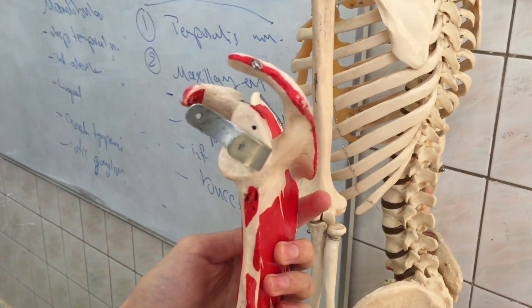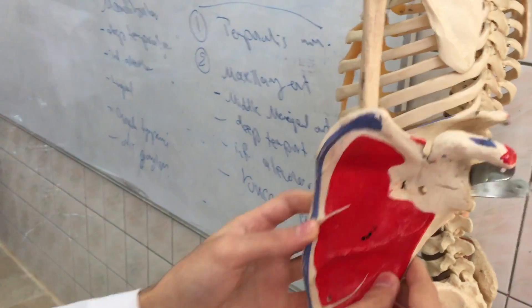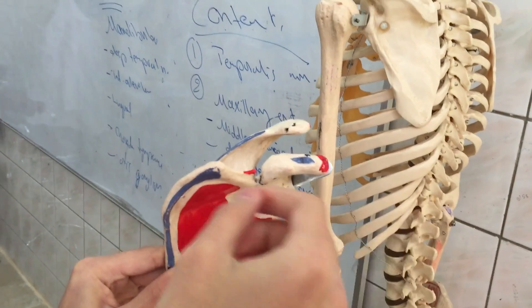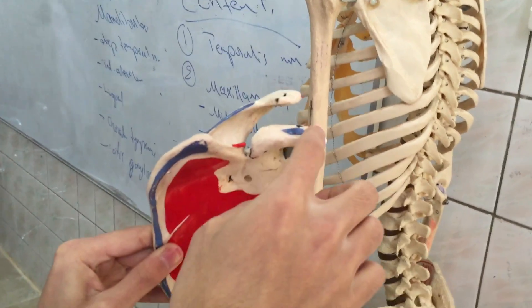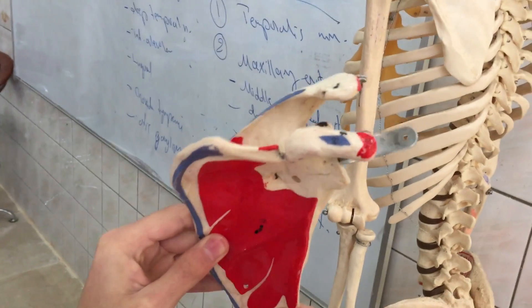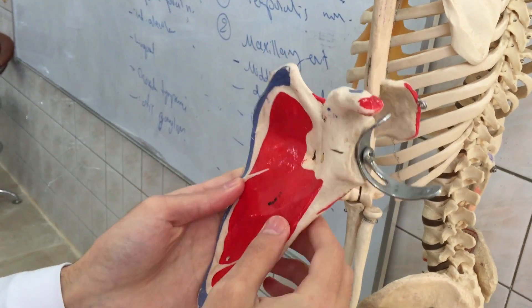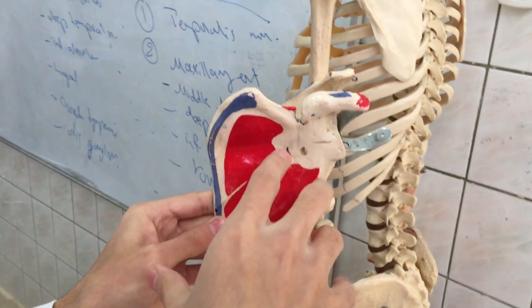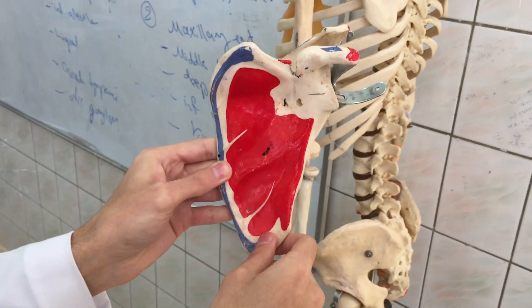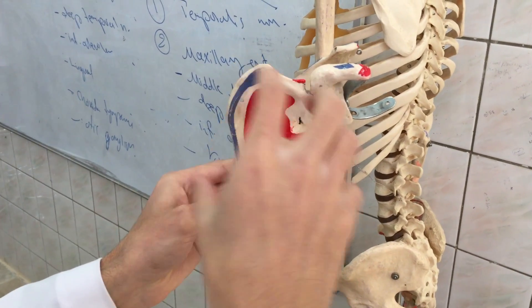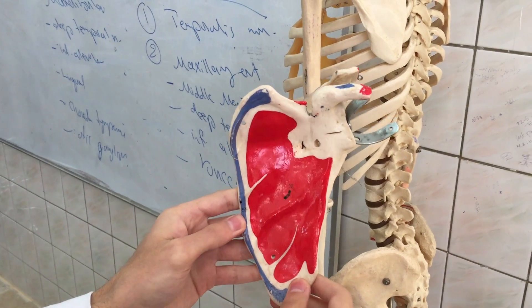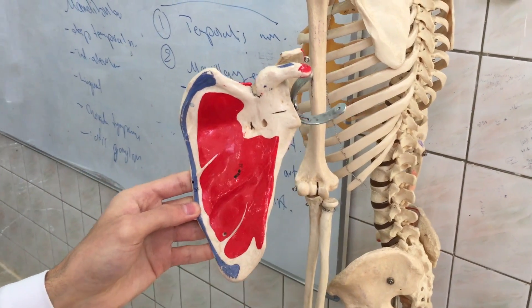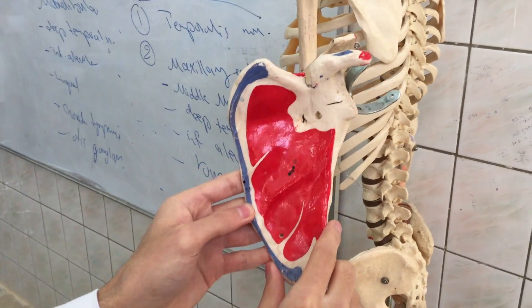Anteriorly to the acromion, we've got a process which is called the coracoid process. And here, at the upper part of the scapula, we've got a notch which is called the suprascapular notch. We also have to note that the anterior surface of the scapula is called the subscapular fossa.